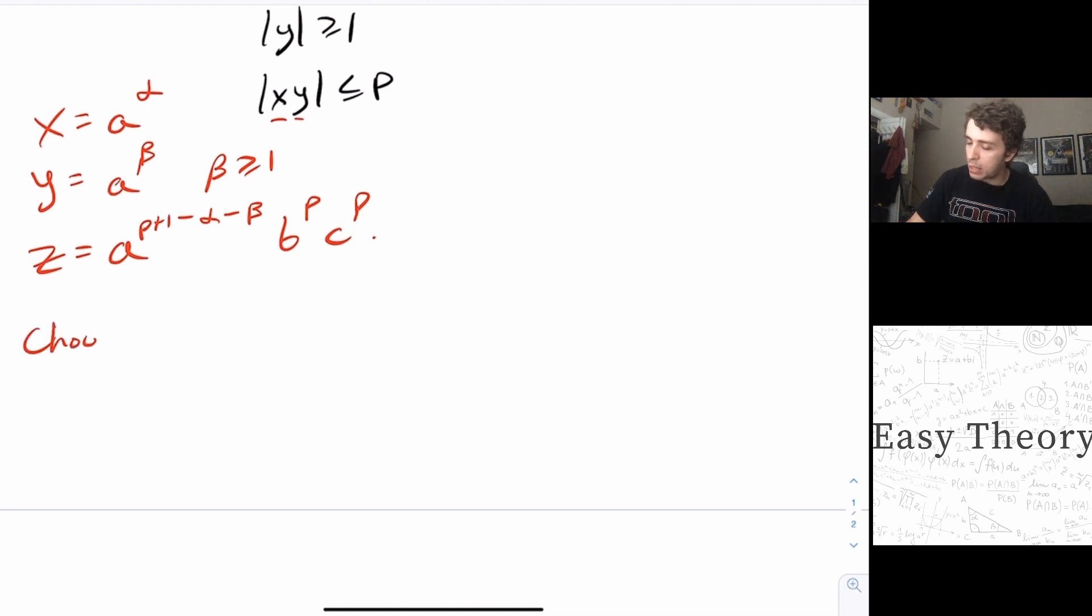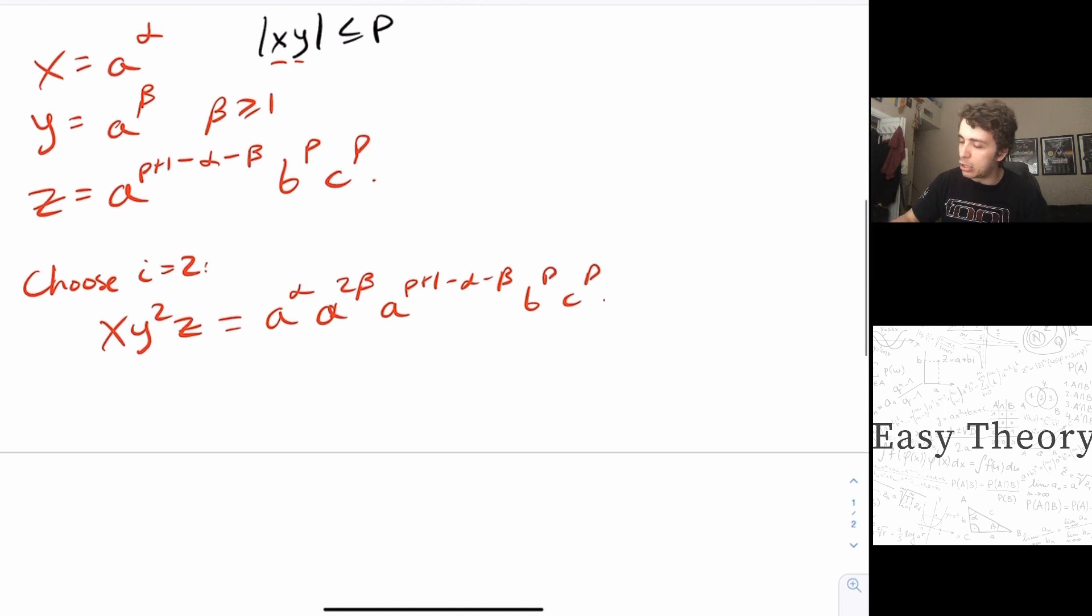Okay, so then let's try, for example, i equal to two. Well, if we look at x, y squared, z squared is just the fact that we have two occurrences of y. Well, that is just A to the alpha, A to the two beta. And I'm just copying down the decomposition that we have here. So A to the P plus one minus alpha minus beta, B to the P, C to the P. So this is just a standard pumping lemma technique. We know that the alphas will kill themselves off, and one of the betas will go away. So at the end of the day, we'll have A to the P plus one plus beta, B to the P, C to the P.